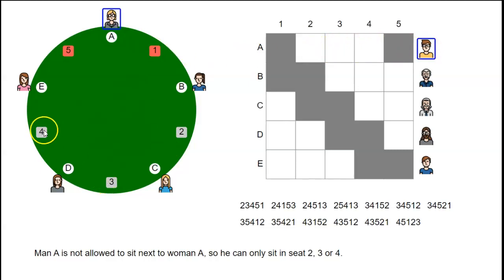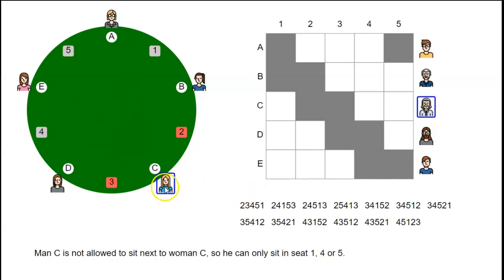Similarly, we look at man C. Woman C has seats 2 and 3 next to her, so man C is not allowed to sit in seats 2 and 3—those are black. But 1, 4, and 5 he is allowed to sit in, so those are white.